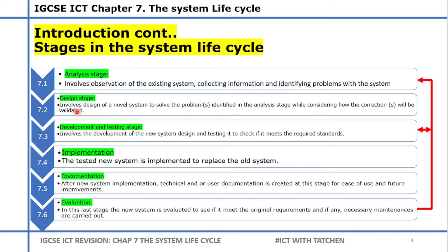At the design stage, it generally involves designing a novel system. From the problems you've identified, you design a new system to solve them. You also consider how the corrections will be validated — how do you validate that your design meets the requirements? Then the development and testing stage takes place: you develop your design, test it, check against requirements, and once requirements are met, you implement the system to replace the old one.